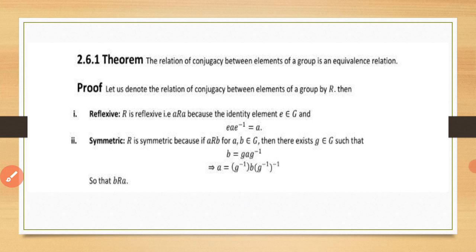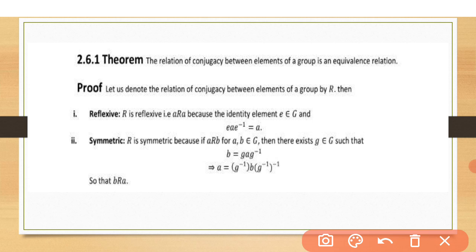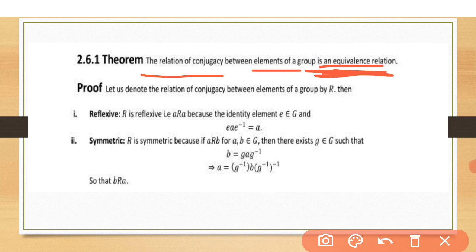Next we have a theorem: the relation of conjugacy between elements of a group is an equivalence relation. What is an equivalence relation? In an equivalence relation, if any relation is reflexive, symmetric, and transitive — if these three conditions are fulfilled — then that relation is called an equivalence relation.